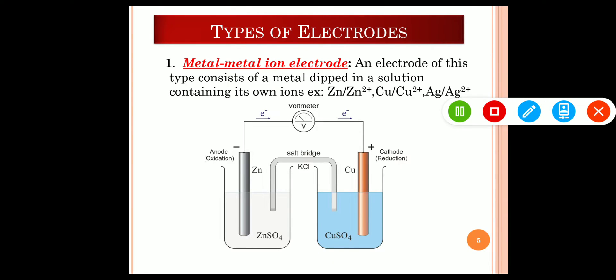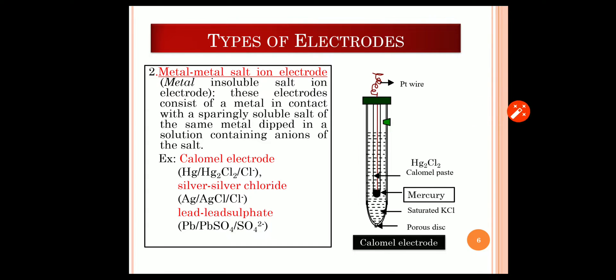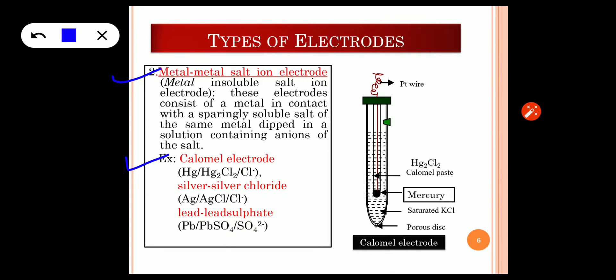The second type is the metal-metal salt ion electrode. A common example is the calomel electrode. Its representation is: Hg | Hg₂Cl₂ | Cl⁻. These electrodes consist of a metal in contact with a sparingly soluble salt of the same metal — mercurous chloride is the sparingly soluble salt of mercury — dipped in a solution containing anions of the salt.